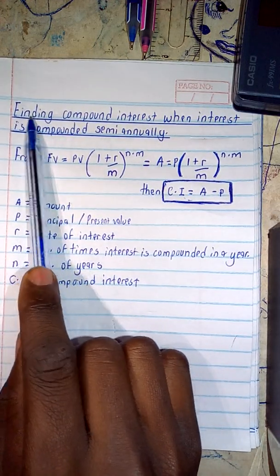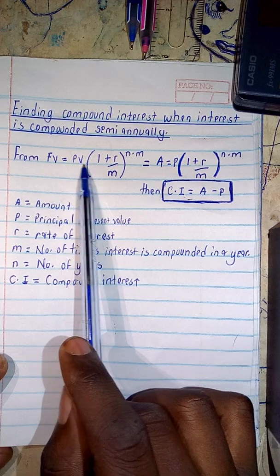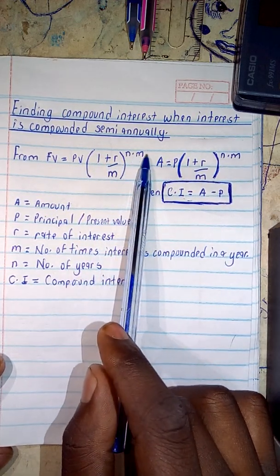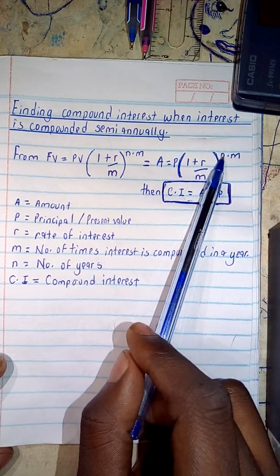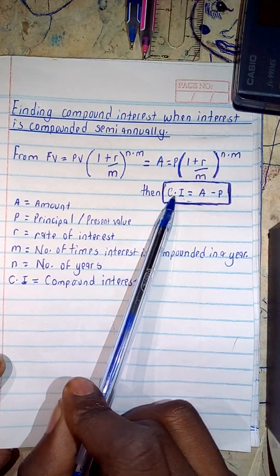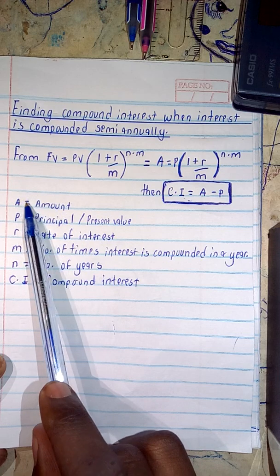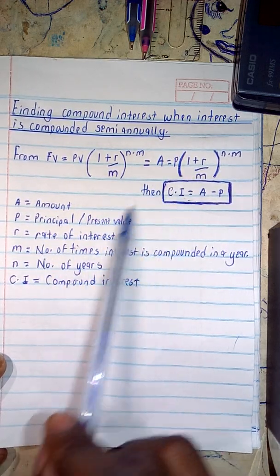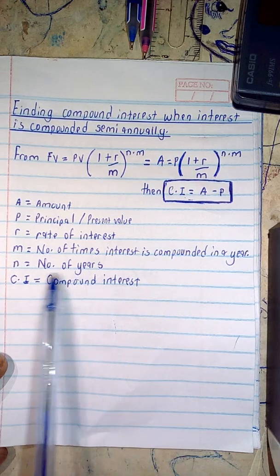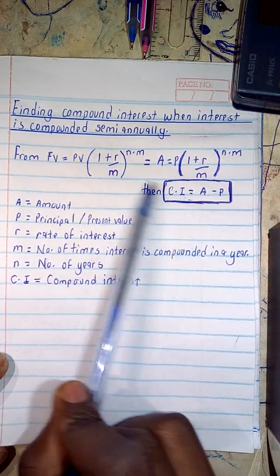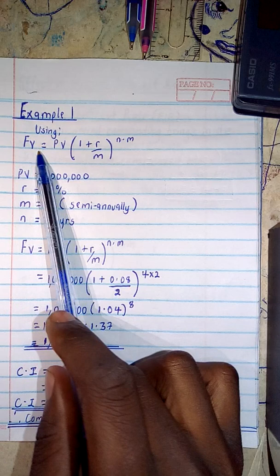For finding compound interest when interest is compounded semi-annually, we use FV = PV × (1 + R/M)^(n×M), or equivalently A = P × (1 + R/M)^(n×M). Compound interest (CI) = A − P, or equivalently CI = FV − PV. In the formula: A is the amount, P is the principal or present value, R is the rate of interest, M is the number of times interest is compounded per year, and N is the number of years.